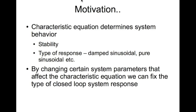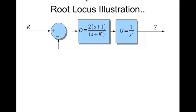What we mean by design is: you fix the location of the closed-loop system poles for a given set of design requirements. In this root locus illustration, we have a closed-loop system where D is the controller and G is the plant. D is given by 2 times (s+1) divided by (s+K), and the plant is 1 divided by s squared. K is the parameter we are going to change in order to change the behavior of the closed-loop system. By selecting K, we fix the location of the closed-loop poles.